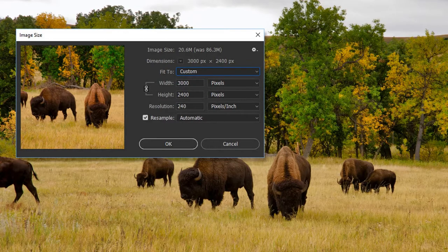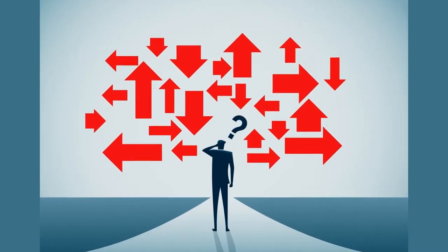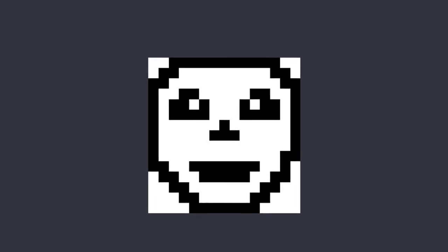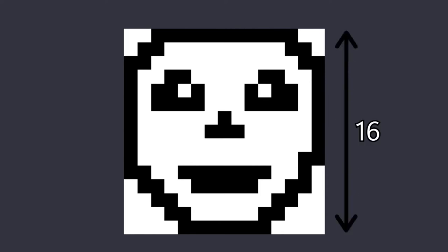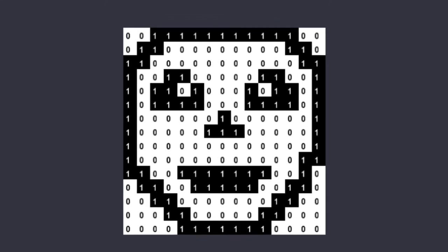A standard image is formed by thousands of pixels, but it will be too complicated, at least for now, to consider all of them. So let's simplify the problem by considering a black and white image formed by just 60 times 60 pixels. I can label with 0 the white pixels and with 1 the black ones.